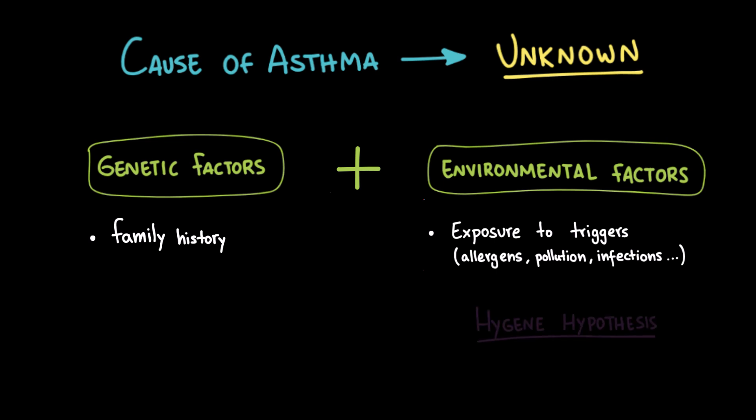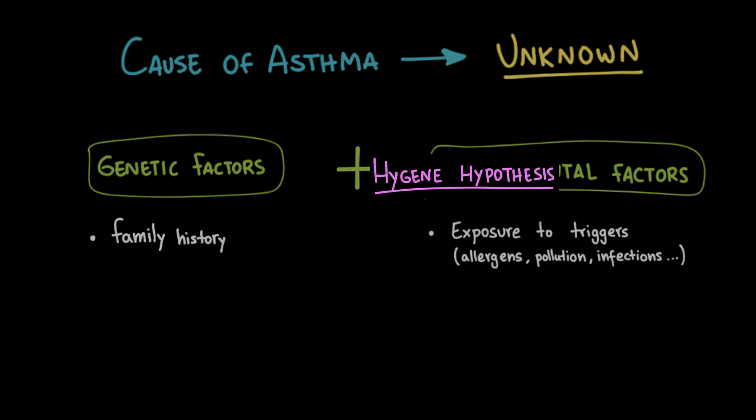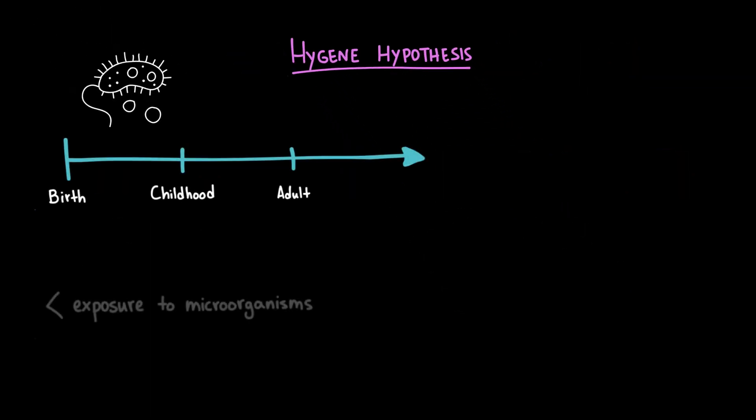One popular explanation is the hygiene hypothesis. The hygiene hypothesis suggests that during early childhood, reduced exposure to infectious agents and microorganisms may impair the normal development of the immune system, ultimately increasing the risk of asthma and other allergic diseases. This basically means that growing up in an excessively clean environment makes the immune system more likely to overreact to harmless substances later in life.